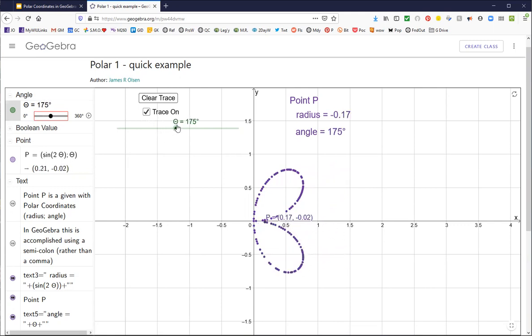Now the radius is going to be positive with the angle in the third quadrant. And now when the angle is in the fourth quadrant, the radius is negative again, and we're back to zero.